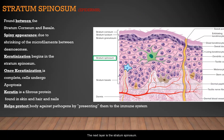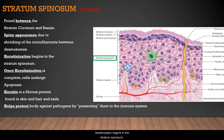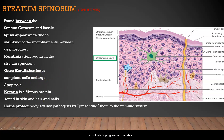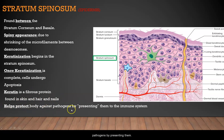The stratum spinosum is found between the stratum corneum and basale. It has a spiny appearance because of shrinking microfilaments between cell junctions called desmosomes. Keratinization begins in the stratum spinosum, and once complete, cells undergo apoptosis, or programmed cell death. Keratin is a fibrous protein found in skin, hair, and nails, and it helps protect the body against pathogens by presenting them to the immune system.